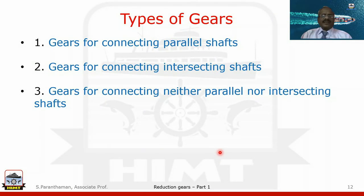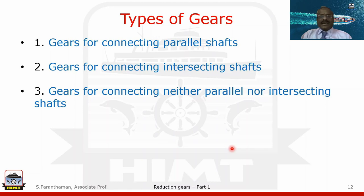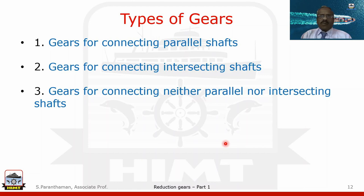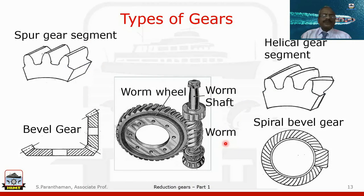Types of gears can be broadly classified into: gears for connecting parallel shafts; gears for connecting intersecting shafts where the axes intersect at a certain point; and gears for connecting neither parallel nor intersecting shafts. For example, in a purifier the motor shaft is horizontal while the bowl shaft is vertical — both shafts neither parallel nor intersecting.